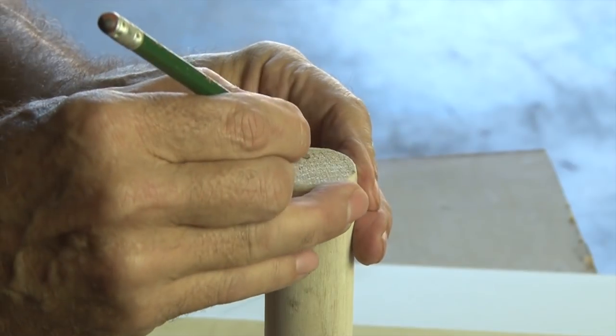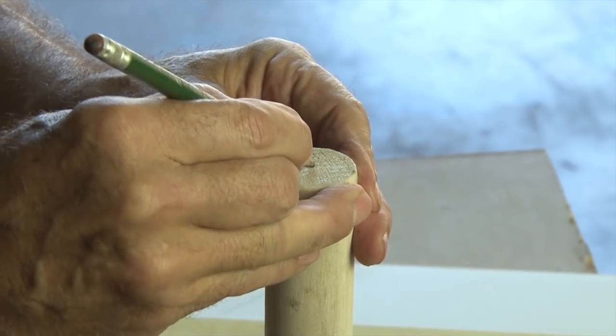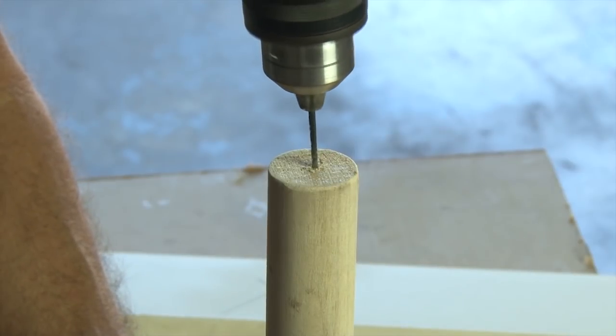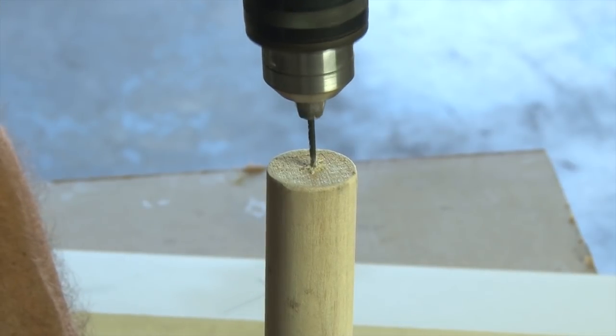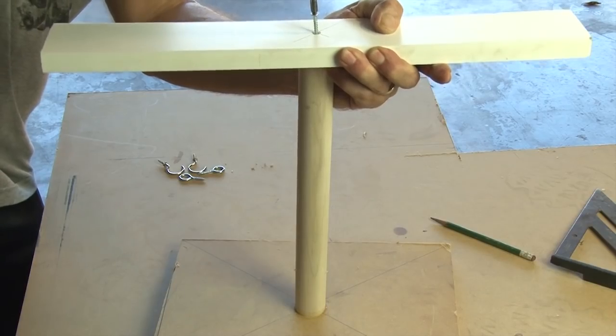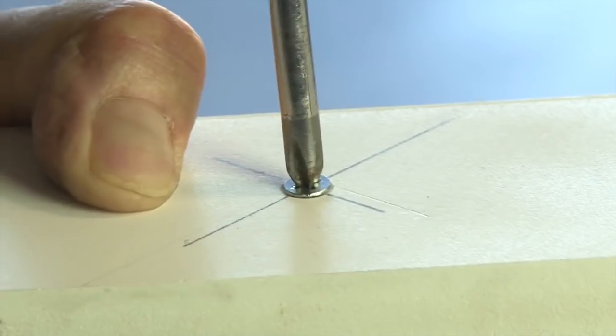Then we're just going to eyeball the center of the top of that dowel, make a mark with a pencil, and then drill into the top of the dowel with that same drill bit. We'll run a screw through the top support and then down into the dowel. Make sure that top screw is flush with the top support.